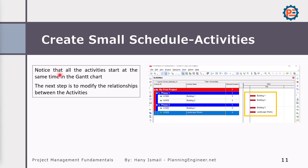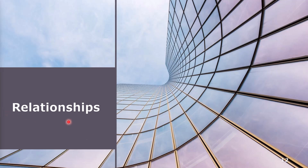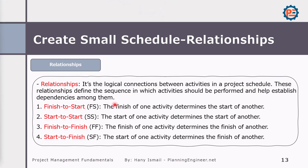Now the next step is to do the relationships. But before doing relationships in Primavera, I would like to explain the four different types of relationships. A relationship is the logical connection between activities in a project schedule. These relationships define the sequence in which activities should be performed and help establish dependencies among them.